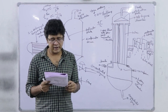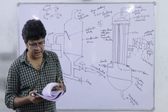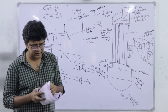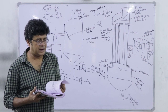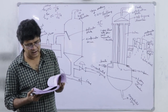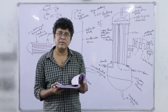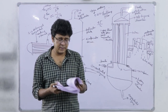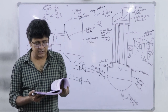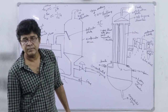In the next session, we will discuss evaporator accessories such as steam jet ejectors, steam traps, and entrainment separators. After that, we will cover the basic terminologies associated with evaporation — capacity, economy, boiling point elevation, and how to correct for hydrostatic head. Thank you.